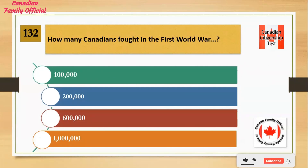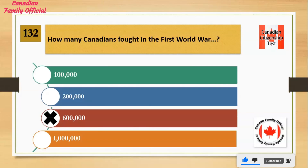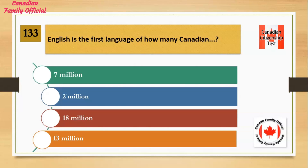How many Canadians fought in the First World War? Number 1: 100,000. Number 2: 200,000. Number 3: 600,000. Number 4: 1,000,000. And the answer is 600,000.